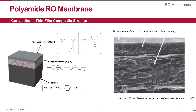One is a microporous polysulfone layer about 30 to 40 microns, cast on top of a reinforcing layer of polyester fabric that varies around 100 microns. The ultrathin polymeric film gives the RO membrane its salt rejection abilities and all other characteristics. The main functions of the two support layers are to reinforce the membrane structure and to maintain membrane integrity and durability.